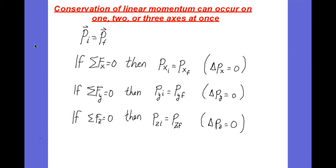Conservation of linear momentum can occur on one, two, or three axes at once. It depends on where the sum of the forces is zero. If the sum of the forces in X, Y, and Z are all zero, the delta momentum is zero in the X, Y, and Z. But even if the sum of the forces is zero in just the Y, then the change of momentum in Y will be zero, and likewise for Z. So these are all exclusive of one another.